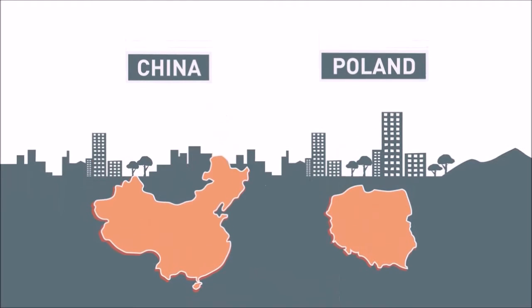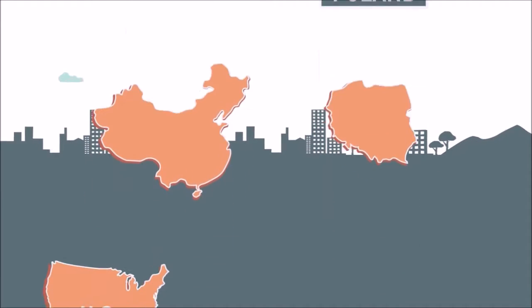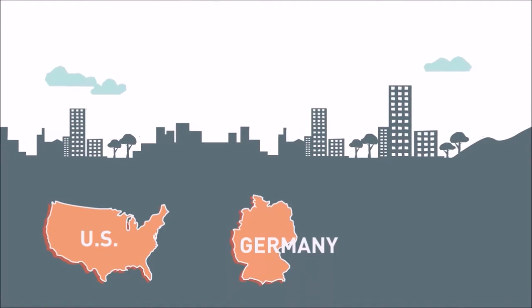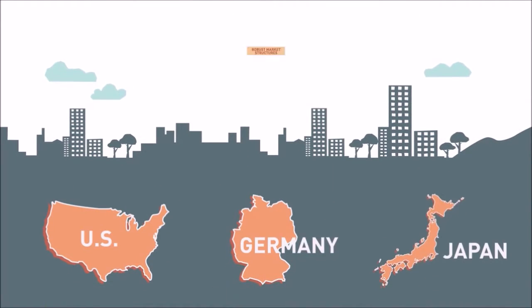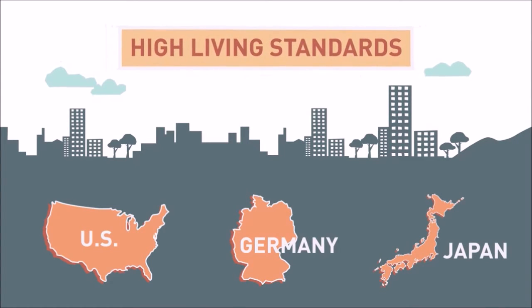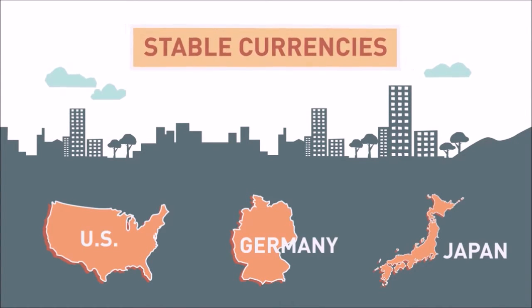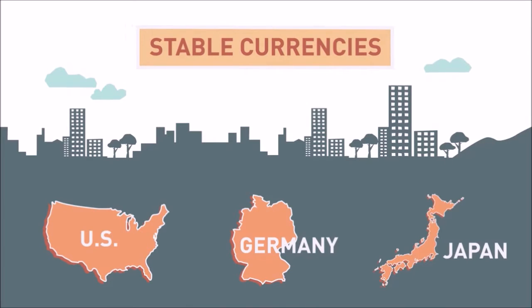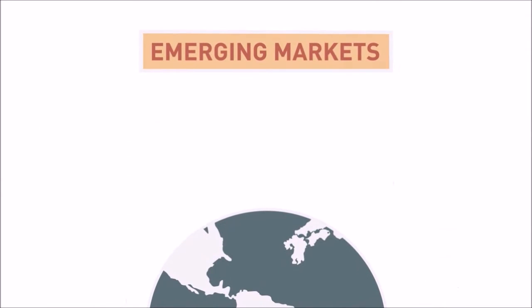Contrast these economies with those of the US, Germany, or Japan, where robust market structures exist, citizens have high living standards, and currencies are more stable. So how do emerging market economies relate to investing?